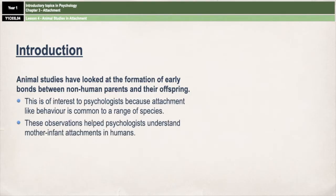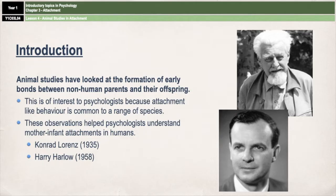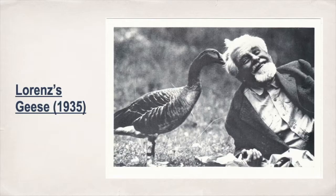There are two animal studies that you need to know for A-level psychology, and those are the two we are going to cover in this video. First, you've got the work of Conrad Lorenz from 1935, and then the work of Harry Harlow in 1958. We're going to start with Lorenz. He was one of the most prominent ethologists in the early 20th century.